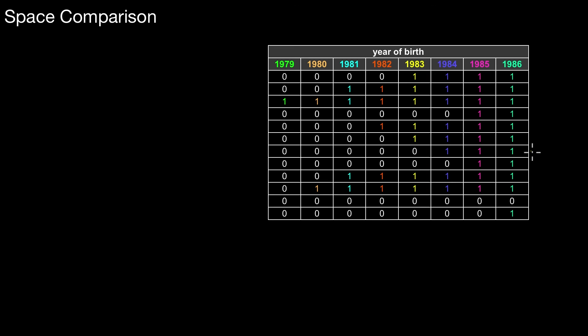For space comparison: the only thing we lose is one bitlist. In this example, before we had 9 bitlists of length n, and now we have 8. There's a slight advantage in terms of space for the range-encoded bitmap, though it depends on the number of distinct values in a real scenario.